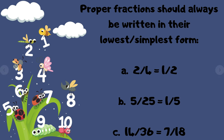Proper fractions should always be written in their lowest or simplest form. So if you have 2 over 4, your answer should be 1 over 2. If you have 5 over 25, your final answer should be 1 over 5.